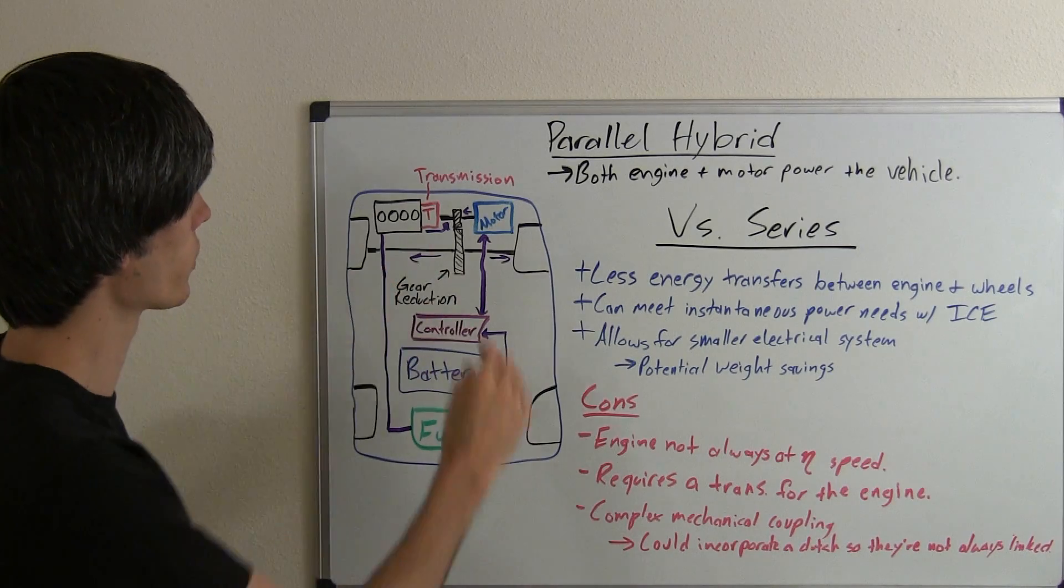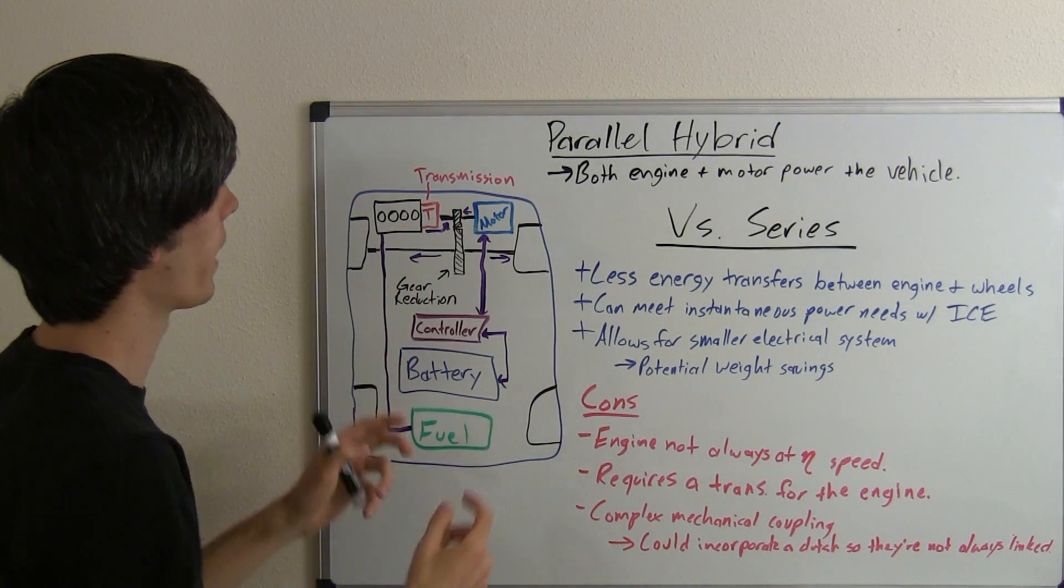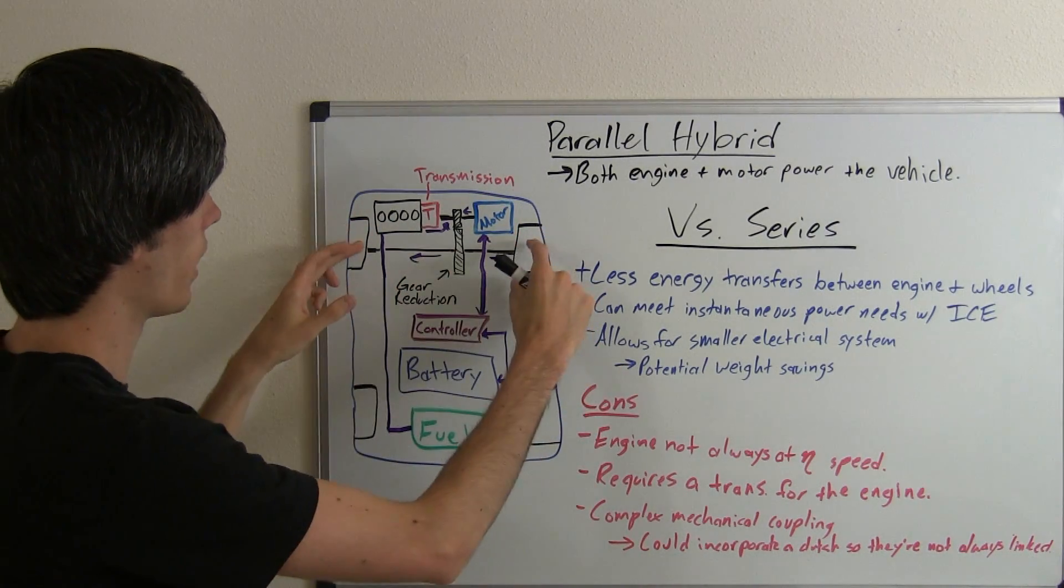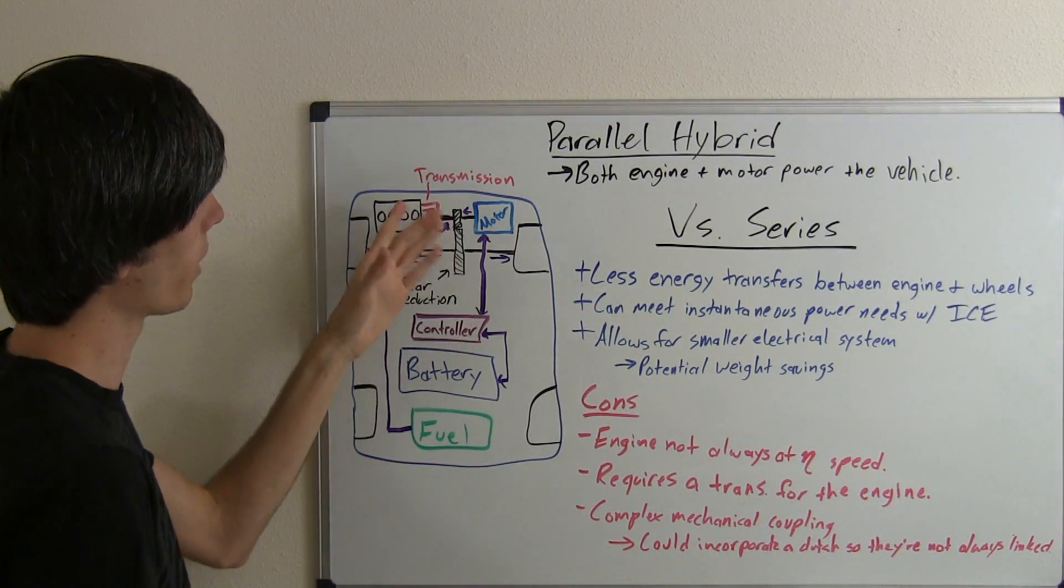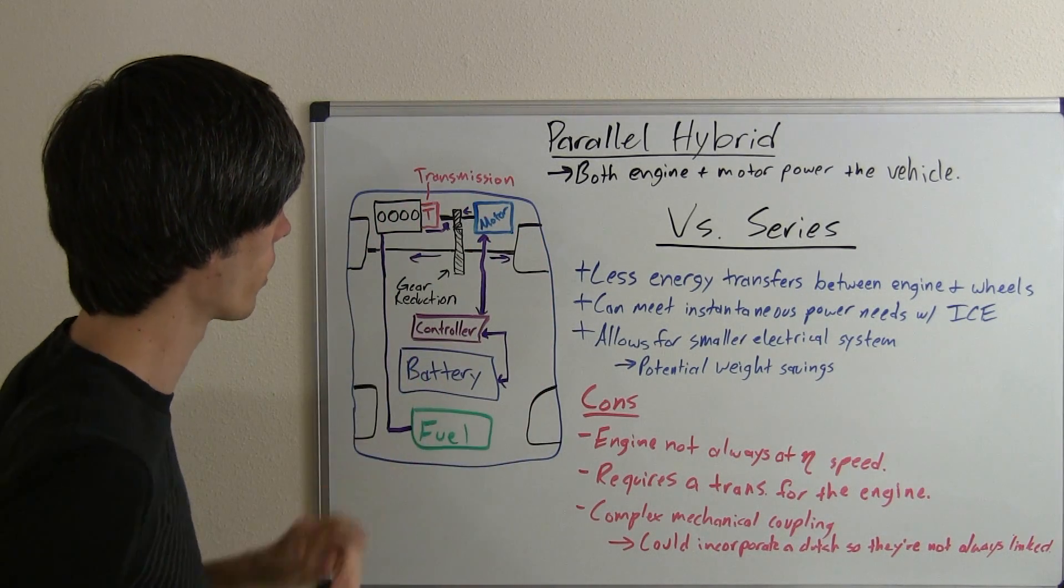So one thing you could potentially do is put a clutch in there so you could disengage the engine from that. Then if you're regenerating energy from braking, you may disconnect the engine and just allow the motor to spin up so it can send that power to the battery.